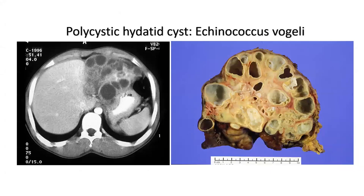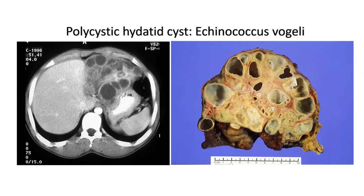This is a patient with echinococcus vogeli polycystic disease, seen in Riyadh in a migrant — a rare presentation mostly from South America. We had to do a left lobe resection, and you can see the gross appearance of polycystic disease, rarely seen in other parts of the world. Thank you very much for giving me this time.